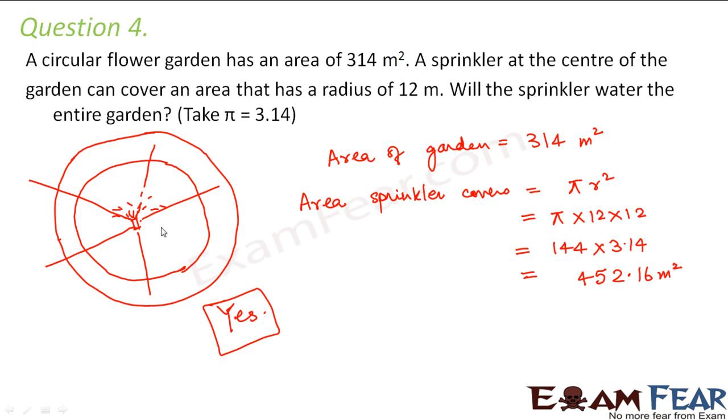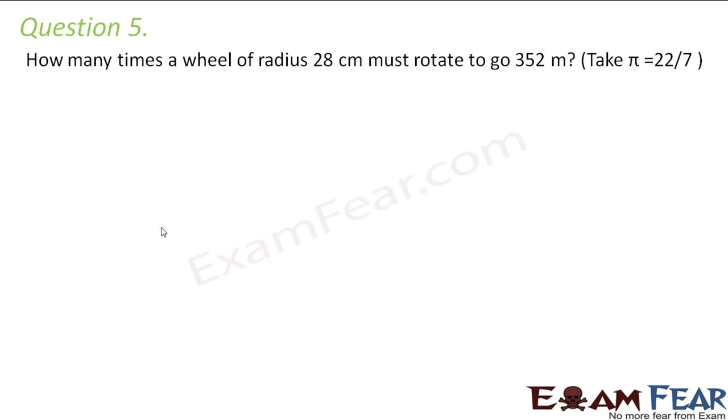Question number 5: How many times a wheel of radius 28 centimeters must rotate to go 352 meters? So when you look at a wheel, this is a wheel.